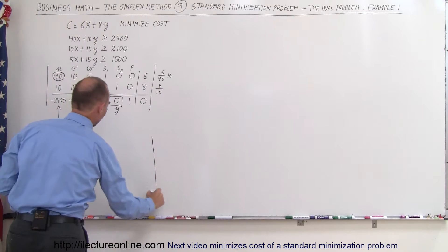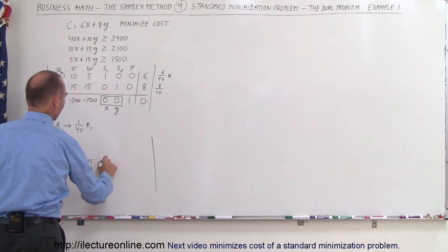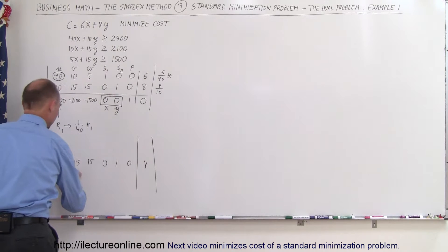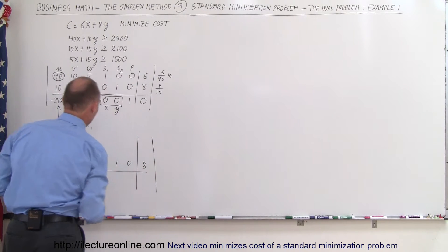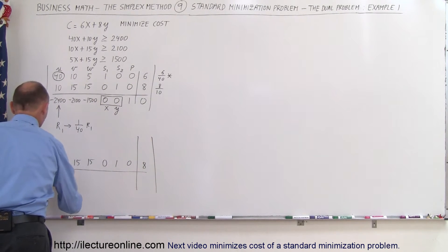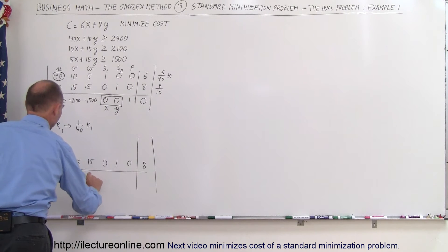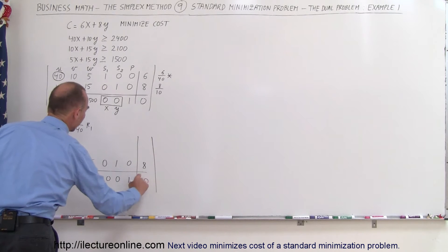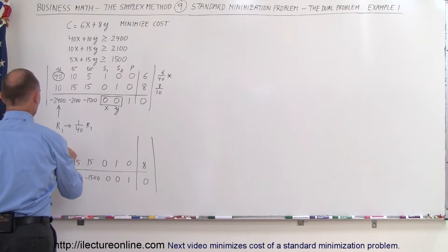The second and third rows don't change, so we have 10, 15, 15, 0, 1, 0, and 8 in the second row. On the bottom row we have minus 2400, minus 2100, minus 1500, 0, 0, 1, and 0. Dividing the whole first row by 40 we get 1.